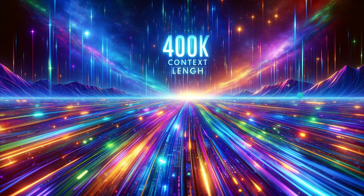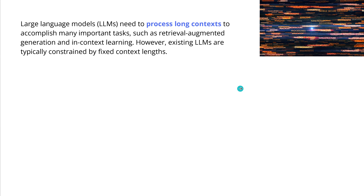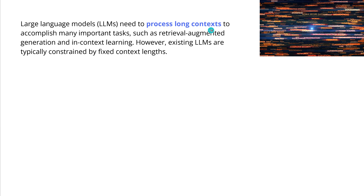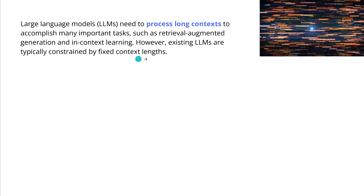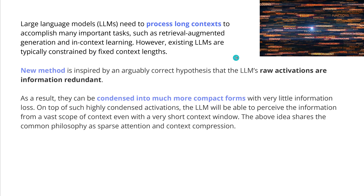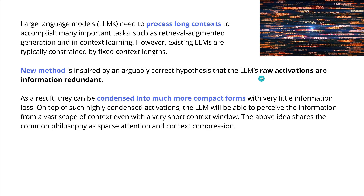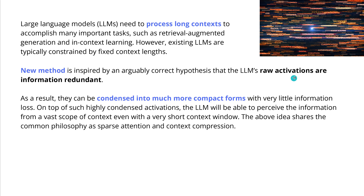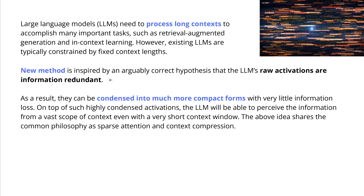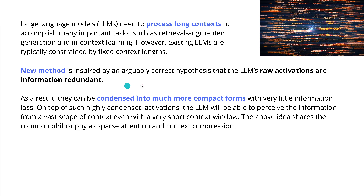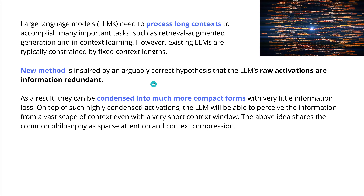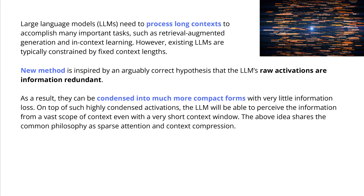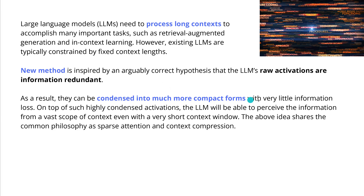Do we lose something when we extend to 400k context length? Our LLMs need to process long context, especially for retrieval augmented generation or in-context learning. But those LLMs are constrained by fixed context lengths — 4k, 8k, 32k, and so on. This new methodology says that the raw activations are information-redundant, and therefore the authors believe they can condense this into a much more compact form with very little information loss. This is a completely new idea, sharing common philosophy with sparse attention and context compression.